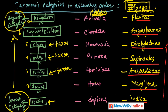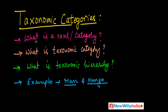The lowest category is species and the highest category is kingdom. Each one is a rank, category, or taxon — the plural term is taxa. All combined are called taxa, presented in a hierarchical manner, hence called taxonomic hierarchy.